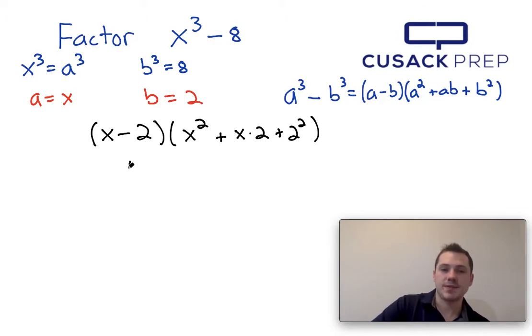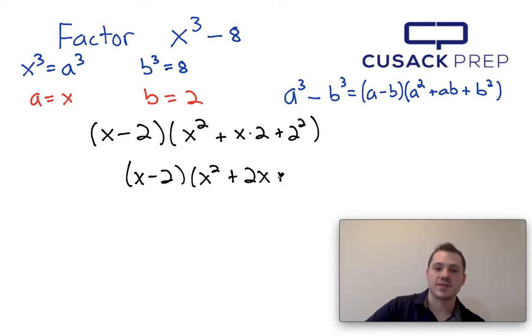And this all simplifies out nicely. I can write this as x minus 2 times x squared plus 2x plus 4.